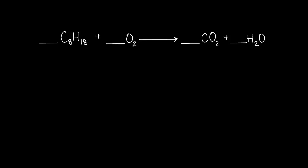The first step is to write out the atomic symbols for each element — carbon, hydrogen, and oxygen. Second step: write a variable on top of each term, meaning each molecule. For C8H18 we write A, for O2 we write B, for CO2 we write C, and for H2O we write D.